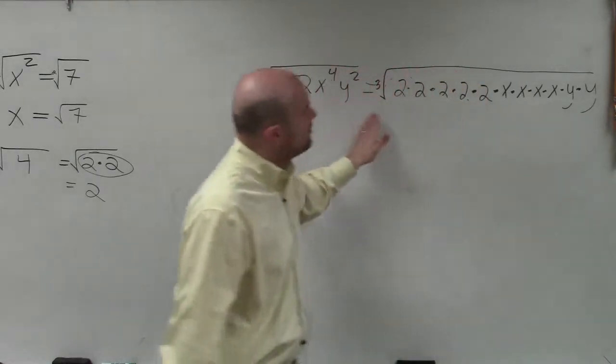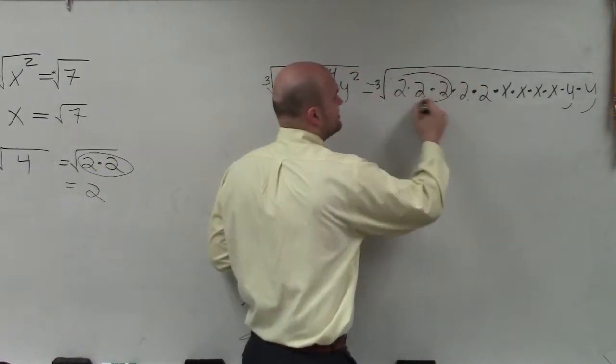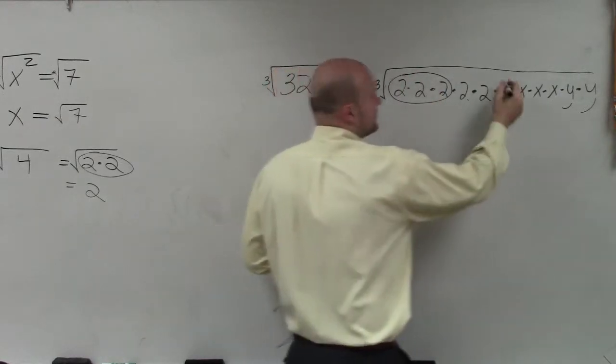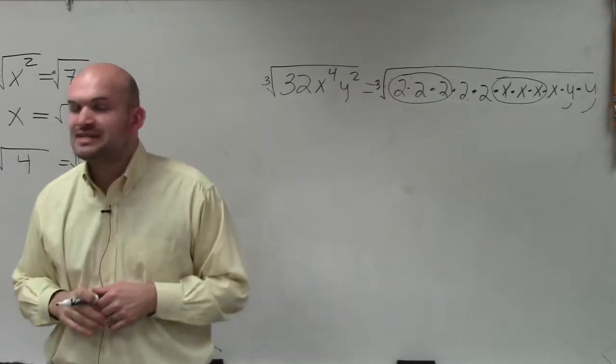That's what you're trying to find. So when we write out the prime factorization of the number, we can again, now we're going to be circling groups of threes. Well, there's only two prime factors that I have three sets of.